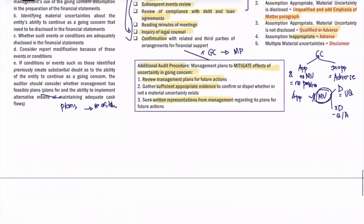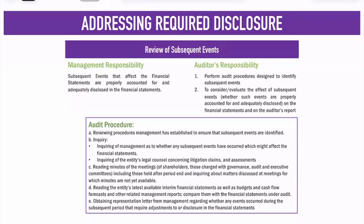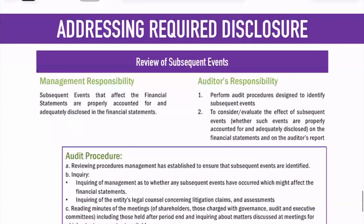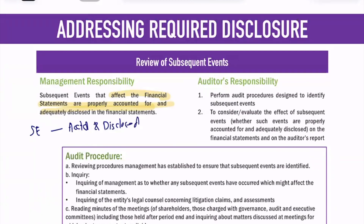Next for our disclosures is subsequent events. We are done with related parties and going concern, and now we move to subsequent events. The management responsibility for subsequent events is that subsequent events affecting the financial statements must be properly accounted for and disclosed. Therefore, the auditor's responsibility is to properly identify subsequent events and evaluate their effect on the financial statements.